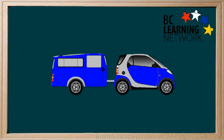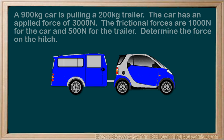In this tutorial, we're going to consider a problem where two objects are connected while moving. Our example: a 900 kilogram car is pulling a 200 kilogram trailer. The car has an applied force of 3000 newtons due to the engine. The friction forces are 1000 newtons for the car and 500 newtons for the trailer. Determine the force on the hitch.